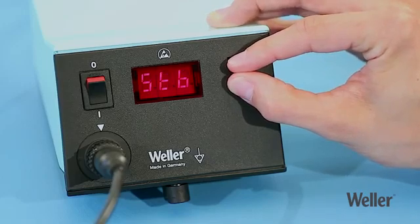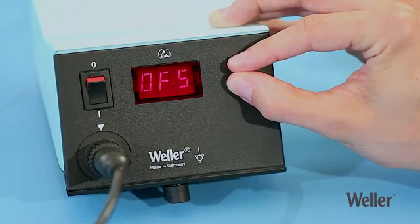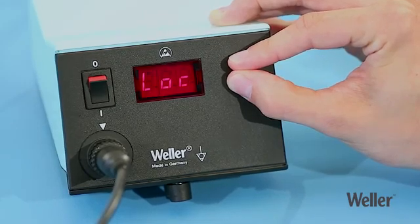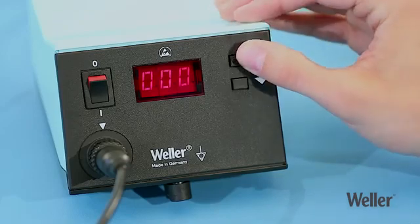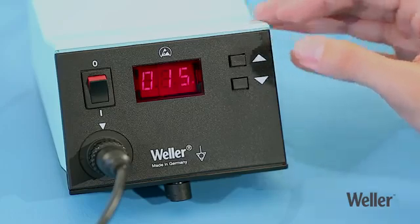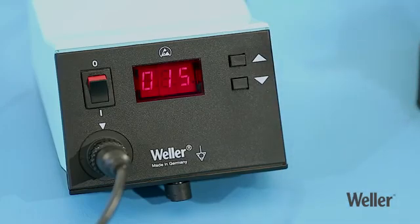Press both buttons to navigate to the window symbol and then specify the temperature window. Then lock the station. The lock temperature represents the middle of the adjustable temperature range.